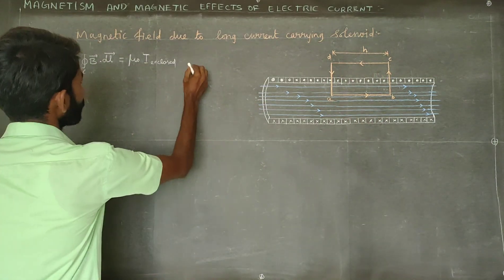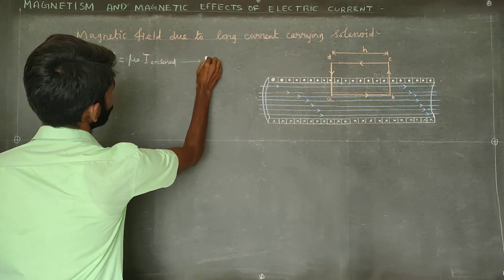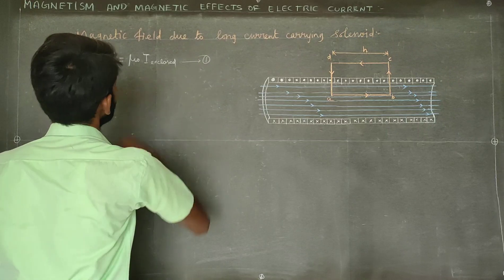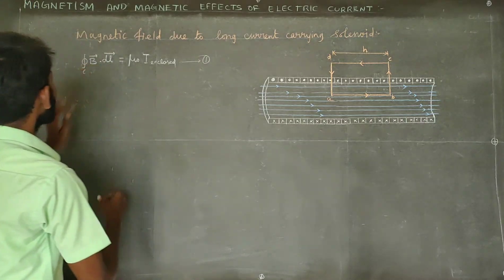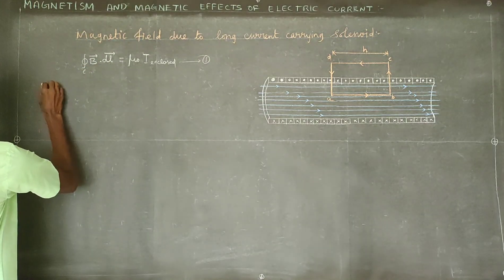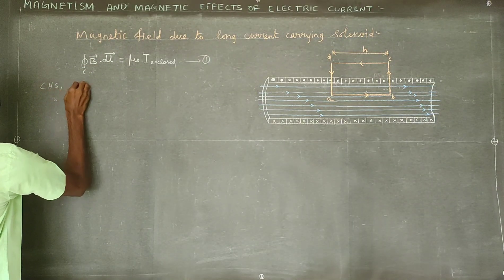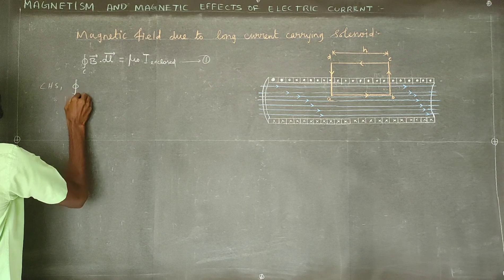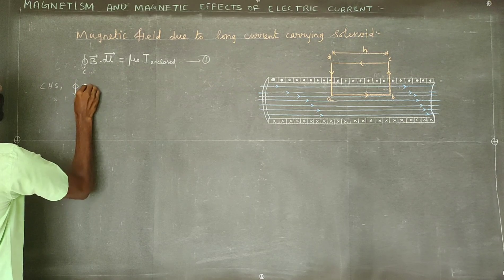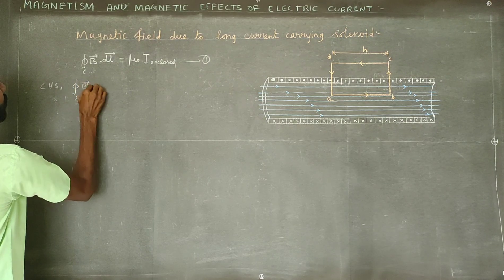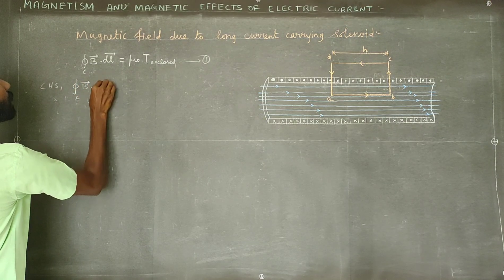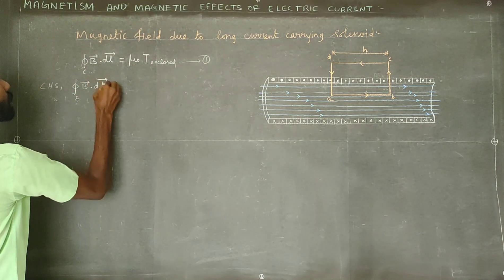Now, for the left-hand side of equation one: what is the closed integral? The closed integral of B-vector dot dL-vector. What is dL? If we write this dL — in the loop A, B, C, D, A — what is the length element dL?